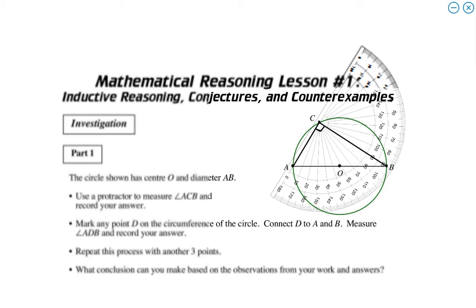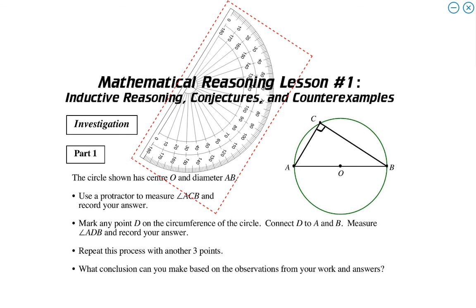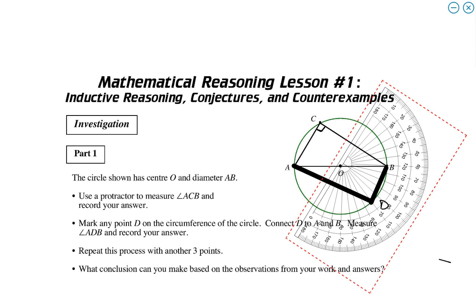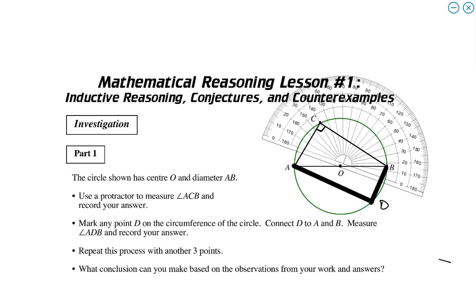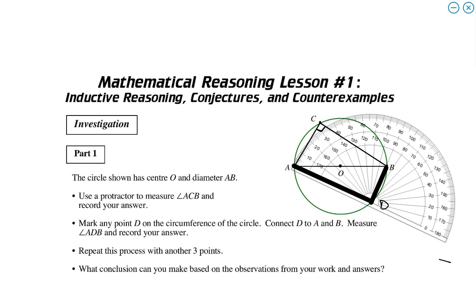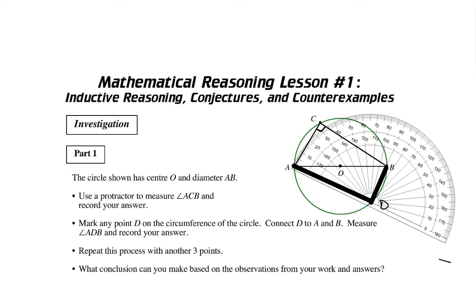Now, what we're going to do is we're going to mark another point anywhere on the circle. Call it point D. And then we're going to connect point D to A and to B. And then we're going to take out our protractor and measure the angle ADB. So, you've figured out the investigation. What's the measure of this angle? Also 90, right?